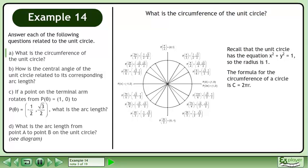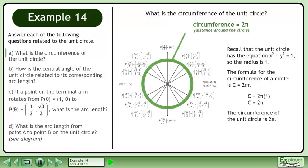The formula for the circumference of a circle is c equals 2πr. Plug in 1 for the radius, this gives us c equals 2π. The circumference of the unit circle is 2π units.